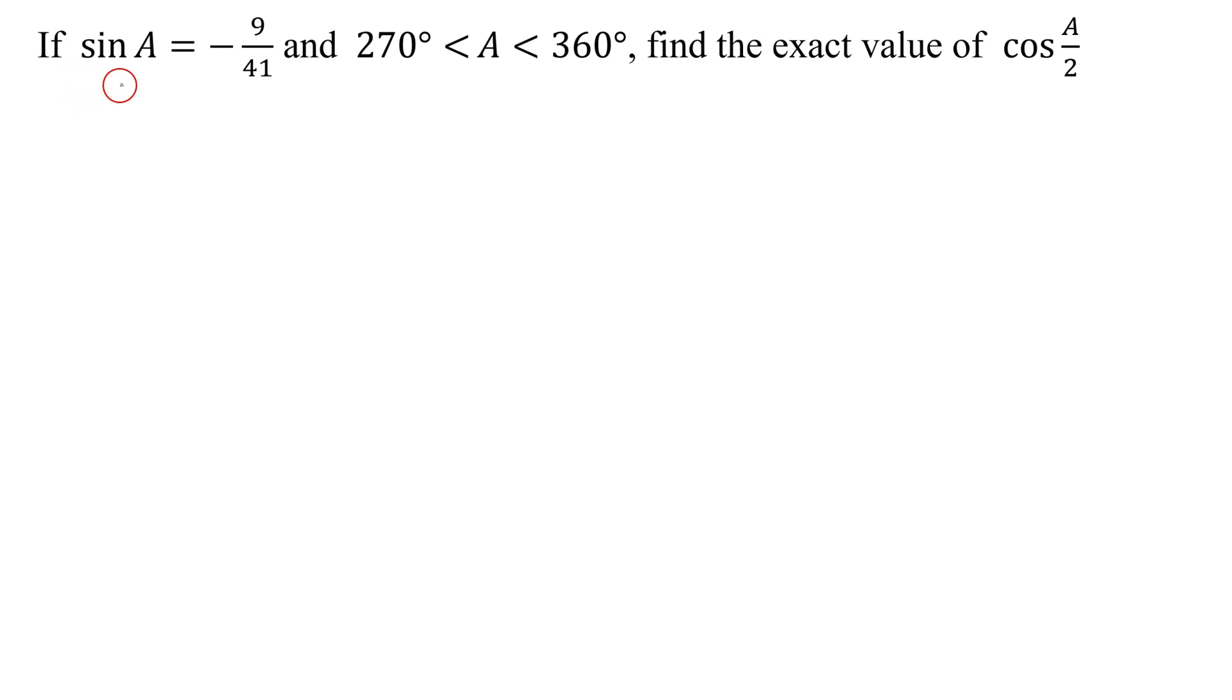In this example, we're given the sine of angle A equals negative 9 over 41, and the measure of angle A lies somewhere between 270 degrees and 360 degrees. We need to find the exact value of the cosine of A over 2.